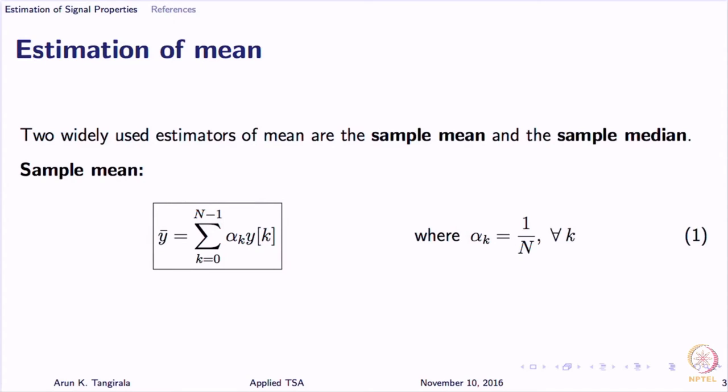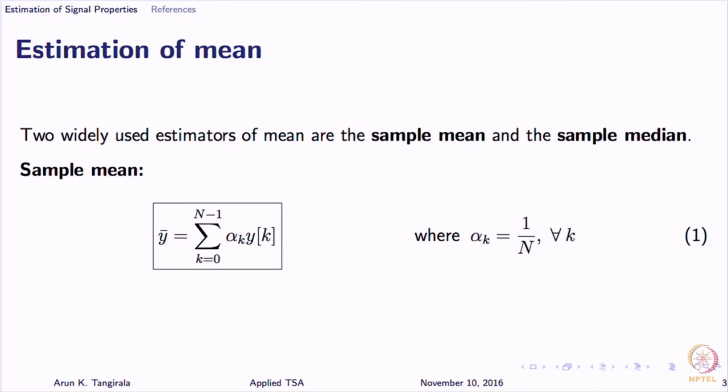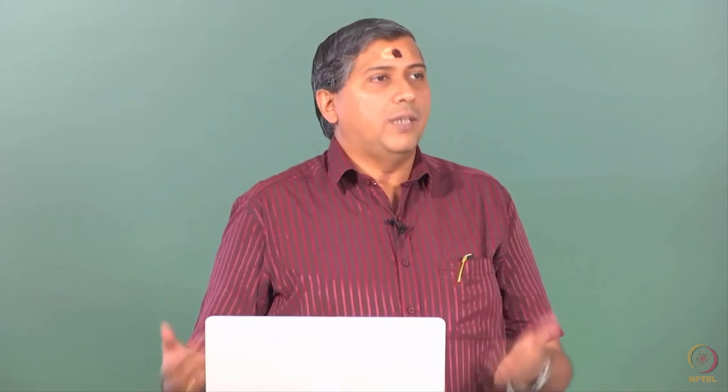I will skip the initial portions of this lecture dealing with estimation of mean. We have talked about sample mean quite a lot — it is an unbiased estimator. It is efficient when the data comes from a Gaussian process, but it is not robust; it is very sensitive to outliers. On the other hand, sample median is not as efficient as sample mean when the underlying process is Gaussian, but it is quite robust.